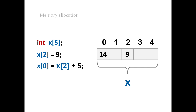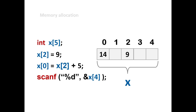So if we do x[2] + 5, the value of x[2] is 9, plus 5 is 14, and we store it in x[0]. This is how arrays work. We can also store values at runtime using scanf with ampersand x[i] — specifying which element of the array to store into. We can then use printf to print the values. Here the answer will be 14 because x[0] is 14.